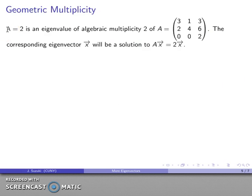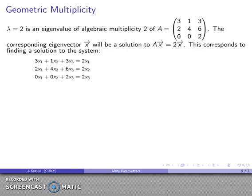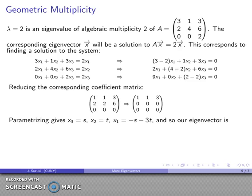So lambda equals 2 is an eigenvalue of algebraic multiplicity 2 of our matrix, and the corresponding eigenvector is going to be a solution. Matrix times vector equals 2 times the vector. And so I can set that system of equations up relatively easily, and I can then row reduce the corresponding coefficient matrix.